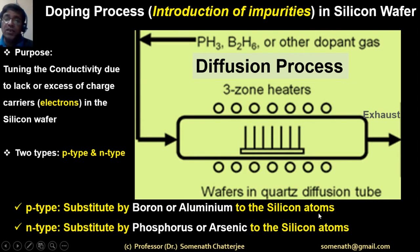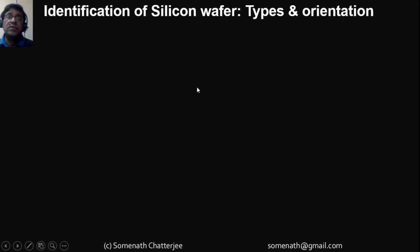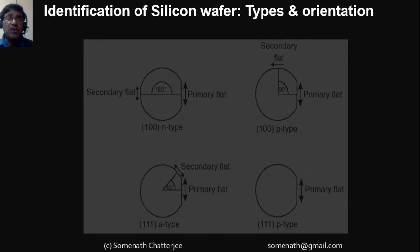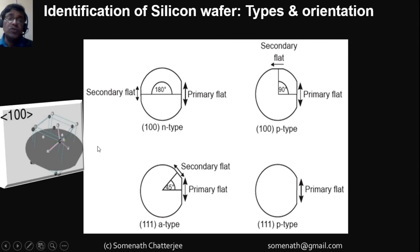Substitution by boron or aluminum to the silicon atoms gives us p-type, where the majority carrier is holes. N-type has electrons as the majority carrier. The next question is how we can identify the type. Manufacturers make some indications so that we can easily understand which one is n-type and which one is p-type, along with the crystal orientation.